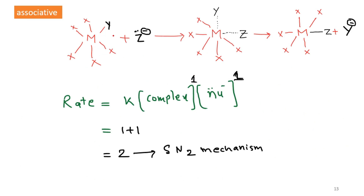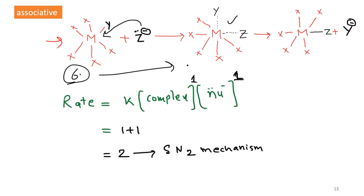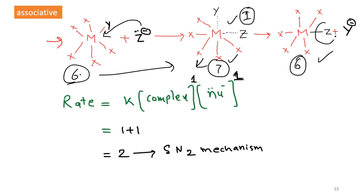Now let's look at the associative mechanism. We take a complex with six coordination number, and another ligand associates to this complex to form an intermediate. In the associative reaction, the coordination number increases by one — the intermediate has a coordination number of seven. In the second step, this intermediate is converted into the final product with coordination number six, and the original ligand is substituted.